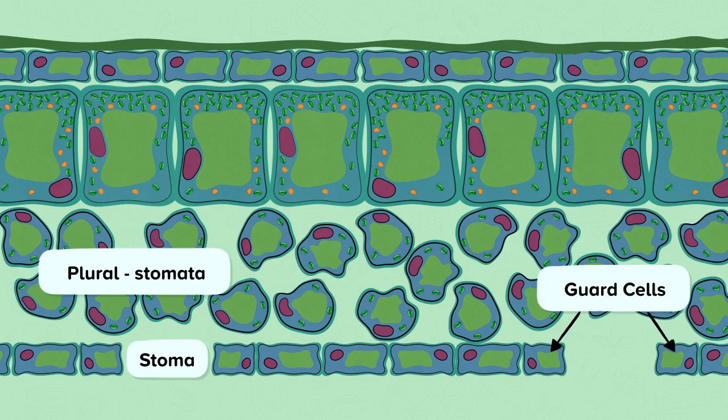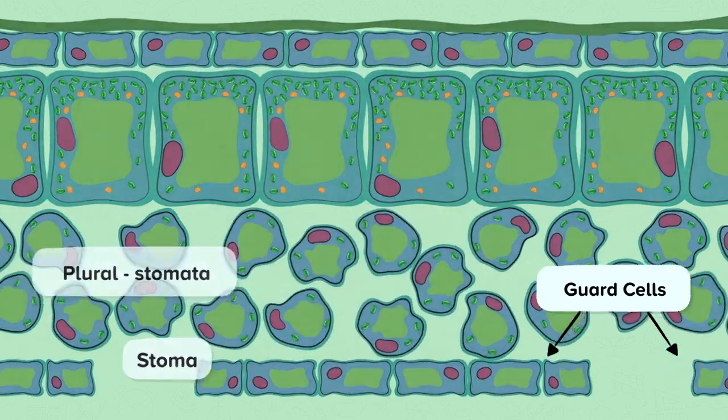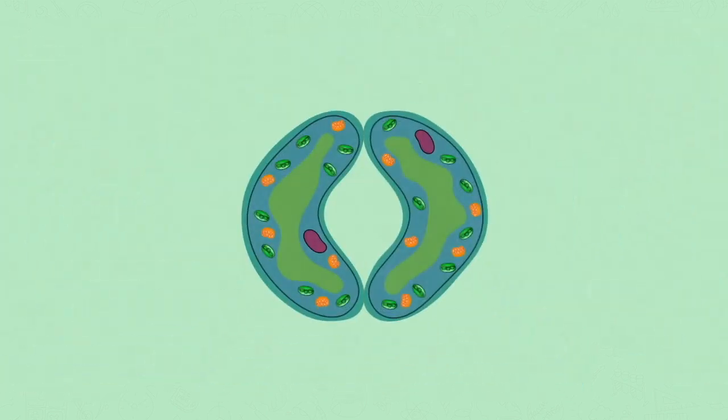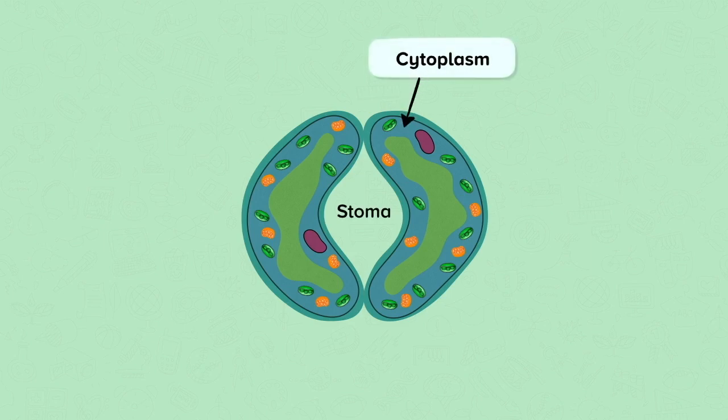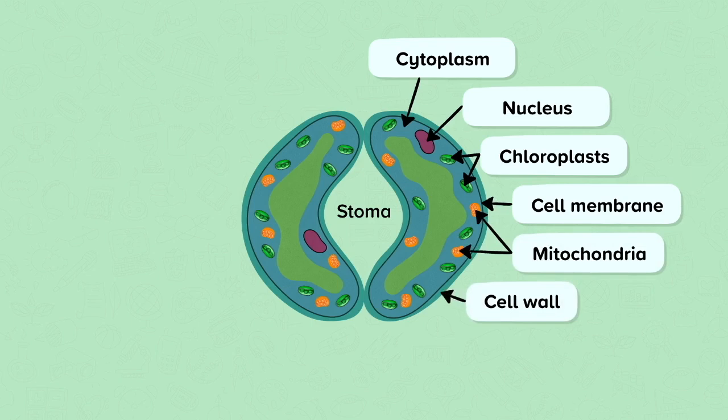Let's have a look at the stoma in more detail. In this photograph, this stoma is closed. The guard cells are able to open and close it. Here is a stoma with the guard cells on either side. We can see the cytoplasm, the nucleus, the chloroplasts, the cell membrane, mitochondria, the cell wall and the vacuole.